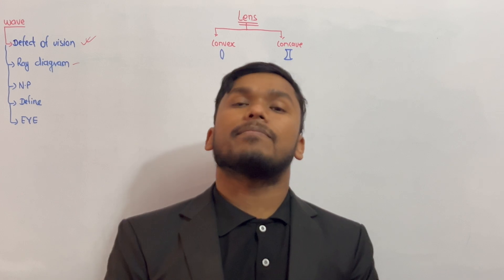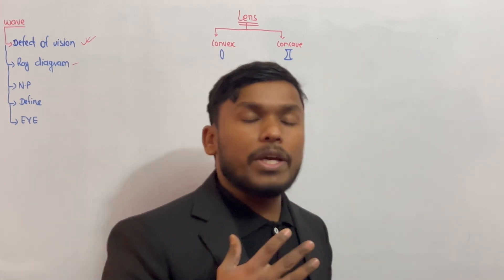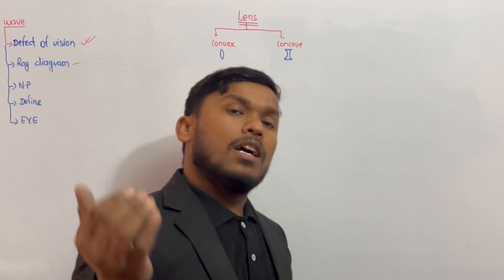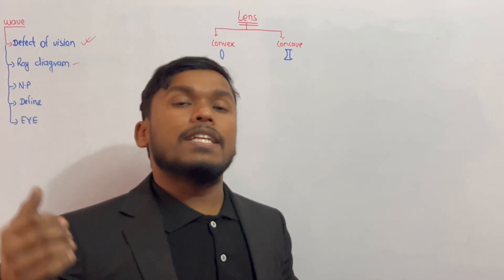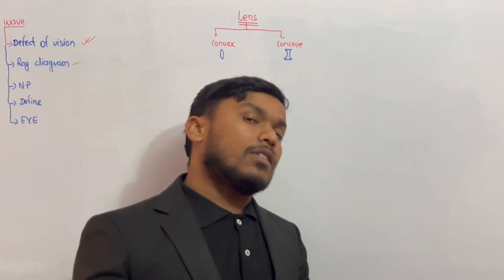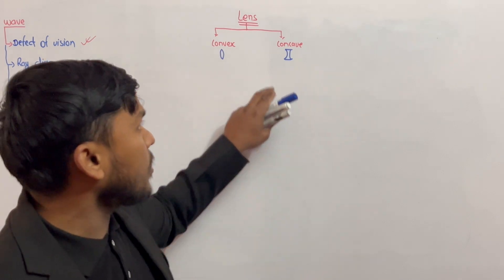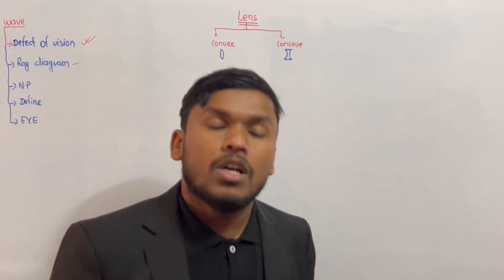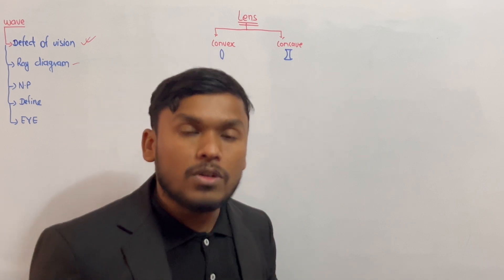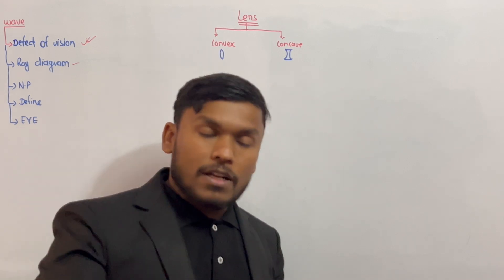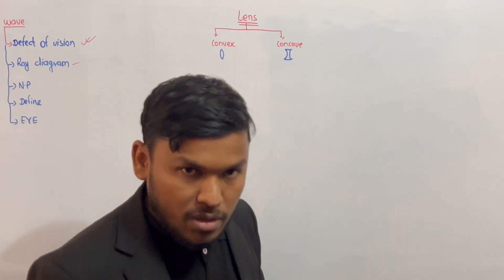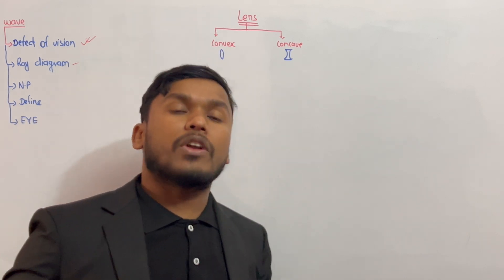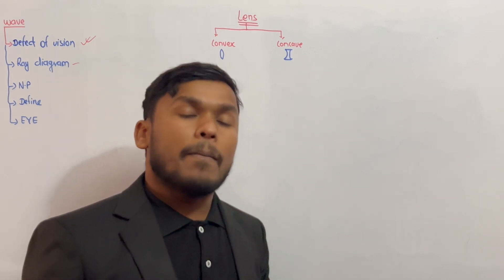This video is about the lens — concave lens and convex lens. We will learn the rules: what is the optical center, what is the focal length, what is the principal axis, what is the principal focus, what is the object distance, what is the image distance. We can also make the diagram and ray diagram, and discuss numerical problems.